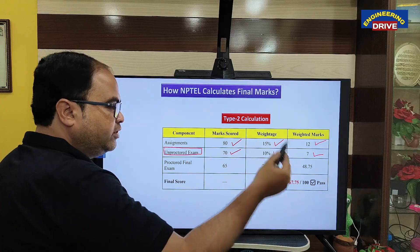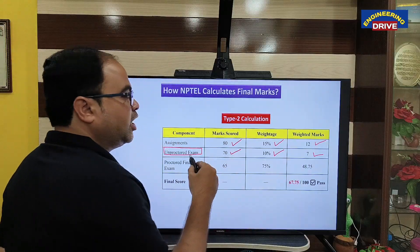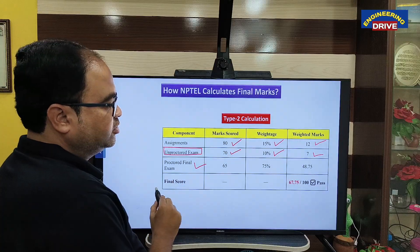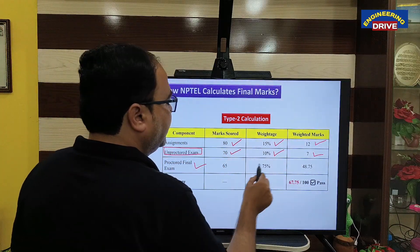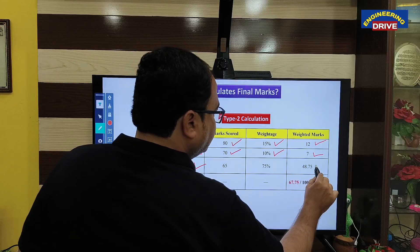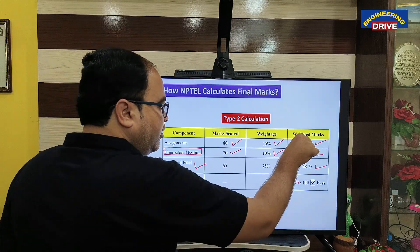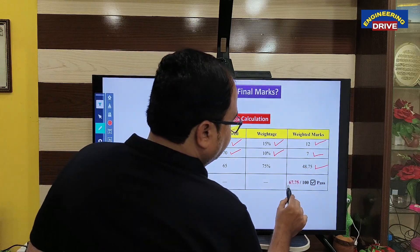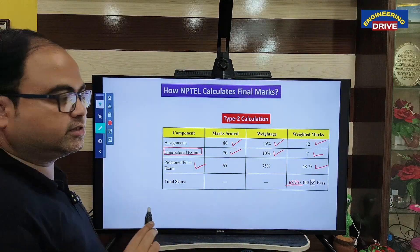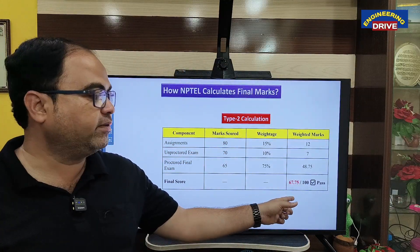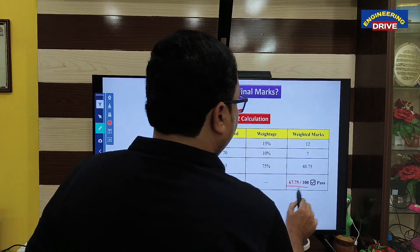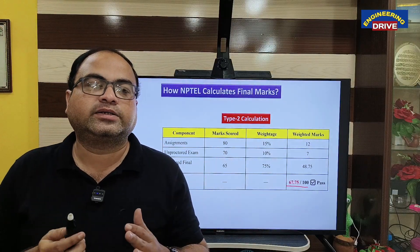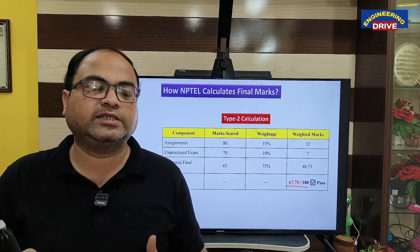At the end of the NPTEL course — say after 12 weeks — you go to a center and write the final exam. In this example, the student got 75 marks, and 75% of 75 is 48.75. Adding all three components: 12 plus 7 plus 48.75 equals 67.75. The result for this student is passed. This is how the Type 1 and Type 2 NPTEL final exam marks are calculated.